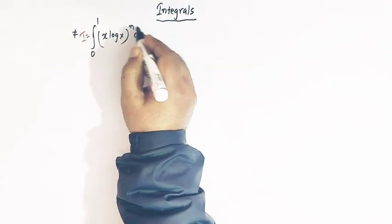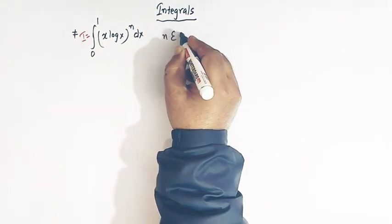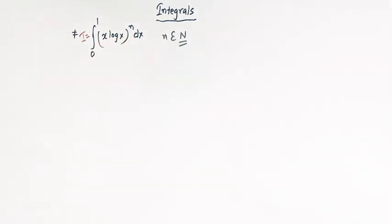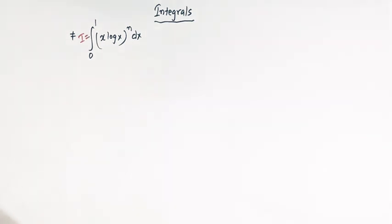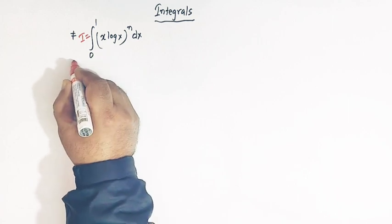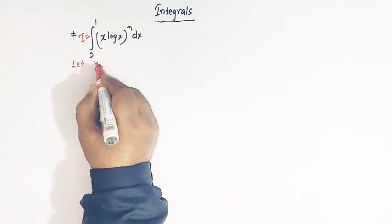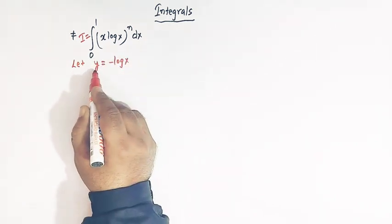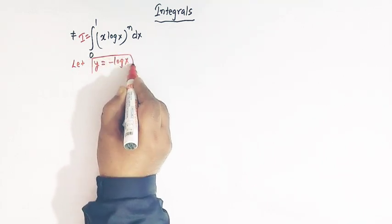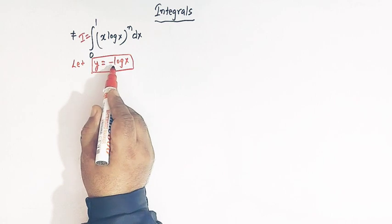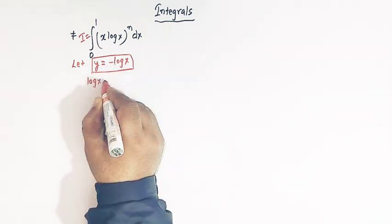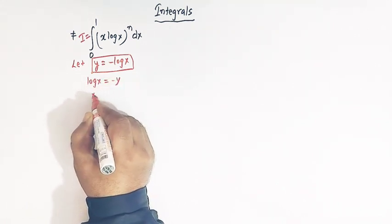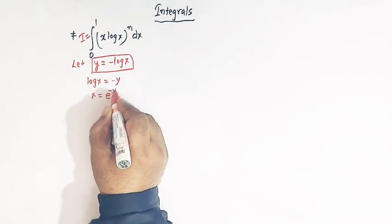In this integral the value of n belongs to the set of natural numbers, so this power n is a natural number. In the first step, we take a variable y equal to negative of log x. When y equals negative log x, then log x equals minus y, and by definition of log we can write x equals e raised to minus y.